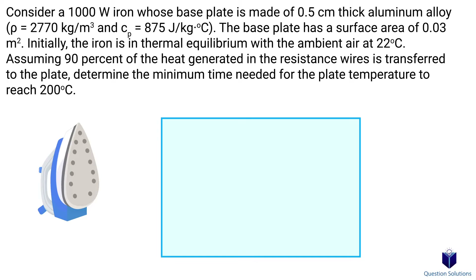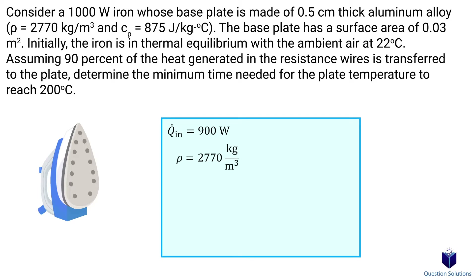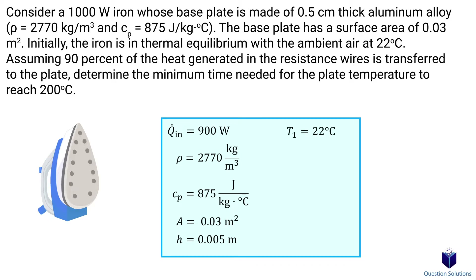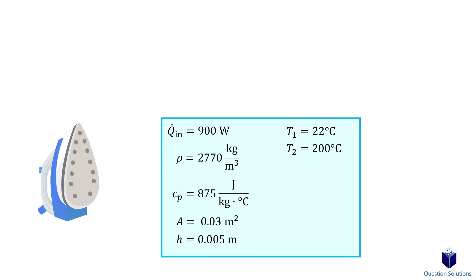First, we will write down what we know. It's a 1000-watt iron, but we're told that only 90% of the heat generated is transferred to the plate, meaning heat transfer is only 900 watts. The base plate has a density of 2770 kilograms per cubic meter, a specific heat of 875, a surface area of 0.03 square meters, and it's 0.5 centimeters thick, or 0.005 meters. The initial temperature is 22 degrees Celsius and the final temperature is 200 degrees Celsius.